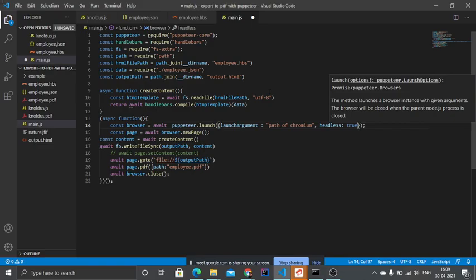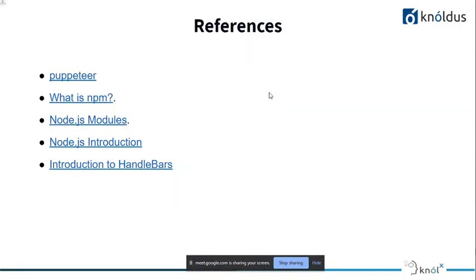Those are the references I used. Does anyone have any questions? I've completed the whole session. One question from the audience — is there a reason behind the naming of the Puppeteer library? Honestly, I haven't read why it is named so, I just know the name of the library. Someone mentioned the context of the library is not related to the name at all.